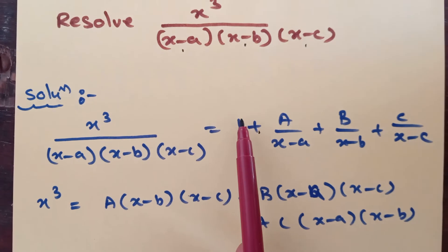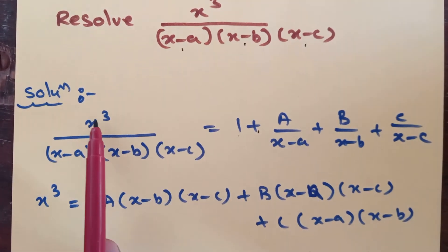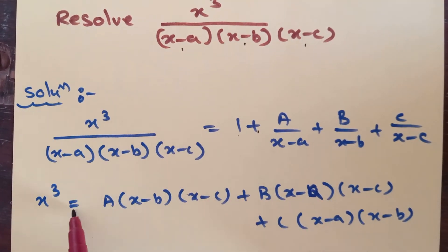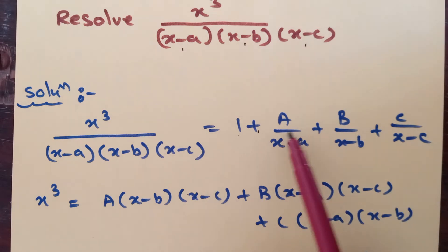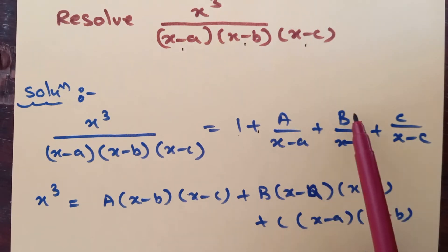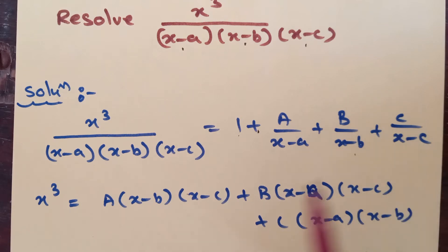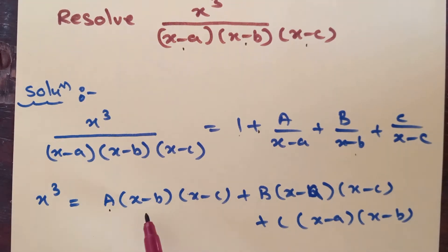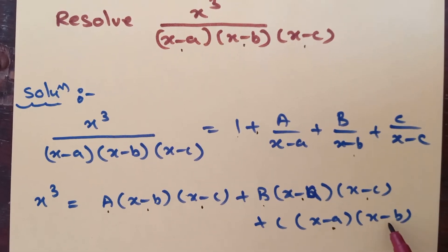Now keep the 1 as it is. Take down the left hand side x cube is equal to right hand side. Do the LCM of A by x minus a, B by x minus b, C by x minus c. Then it becomes A of x minus b, x minus c, plus B of x minus a, x minus c, plus C of x minus a, x minus b.